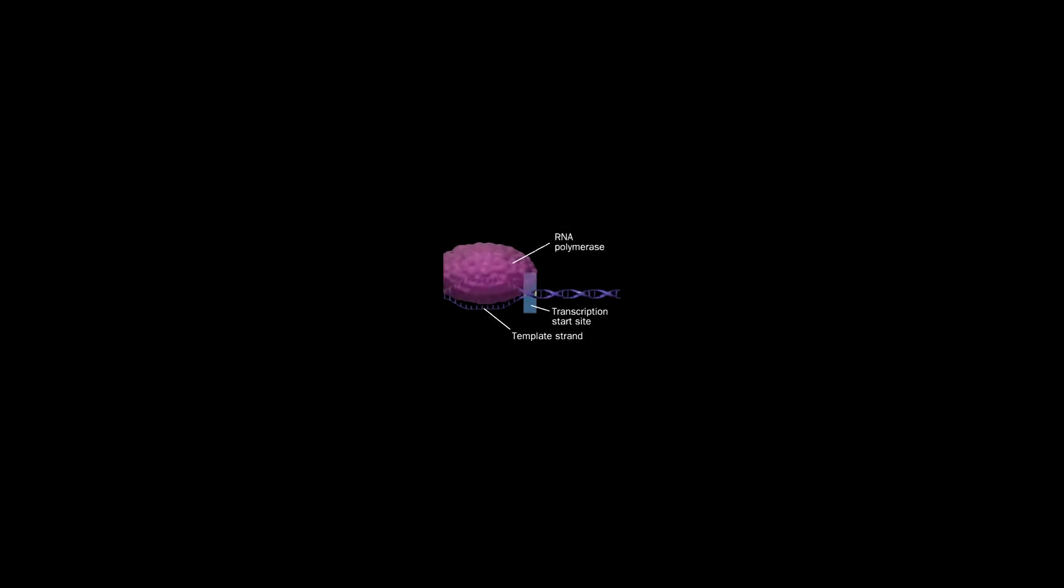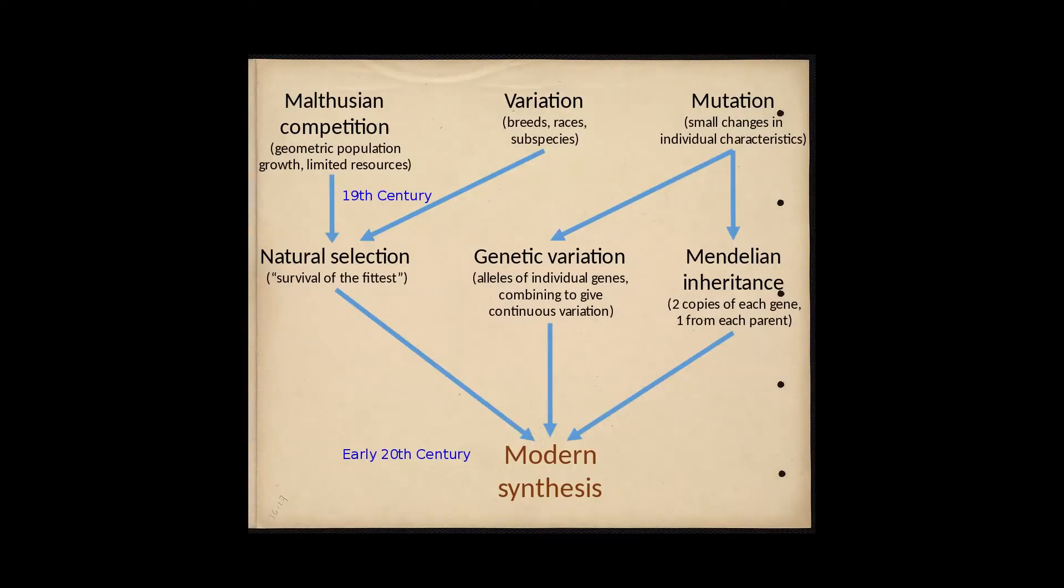Most textbooks describe evolution as a two-step process. First, a steady trickle of random genetic mutation creates variation in an organism's DNA. Then, natural selection acts like a filter, deciding which mutations are passed on. This usually depends on whether they confer some sort of advantage, although not everything produced over the course of evolution is an adaptation. So natural selection is the sole driving force pushing the direction in which organisms evolve.